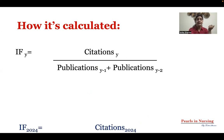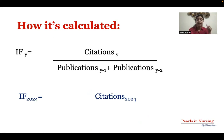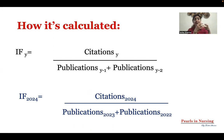For example, if you want to see the impact factor of a journal in 2024, you look at how many citations occurred in 2024 for articles published in the last two years — 2022 and 2023 — and how many articles were published in those two years.